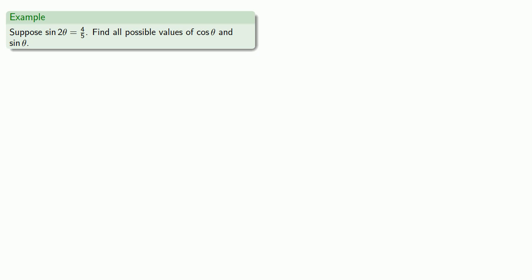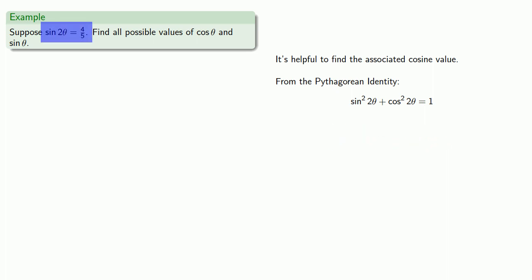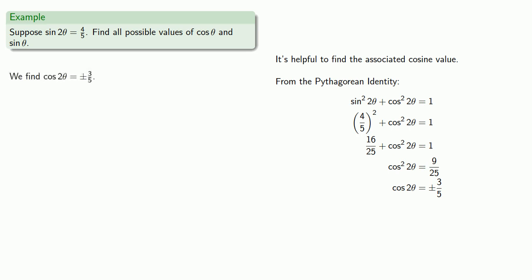So suppose sine of two-theta is four-fifths — let's find all possible values of cosine theta and sine theta. For a variety of reasons, it's actually helpful to find the associated cosine value. So from the Pythagorean identity, we know that sine squared of two-theta plus cosine squared of two-theta equals one. We know the sine of two-theta, so we'll replace and solve.